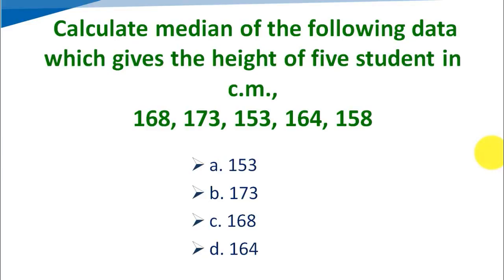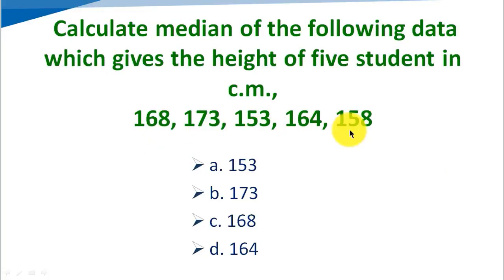Calculate the median of the following data giving the heights of five students in centimeters: 168, 173, 153, 164, 158. Option A: 153, Option B: 173, Option C: 168, Option D: 164. The correct answer is Option D, 164.